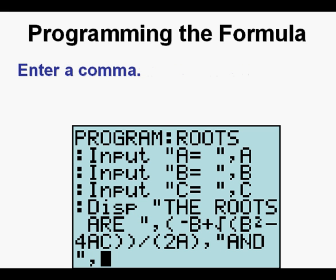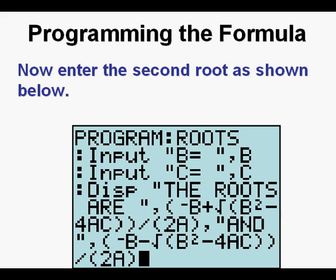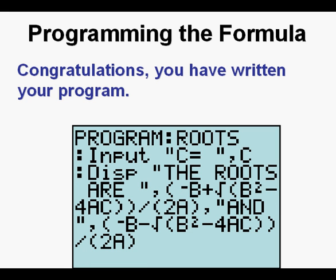Enter a comma, then enter the second root: open parentheses, negative B, minus square root of B squared, minus 4AC, close double parentheses, divide, open parentheses, 2A, close parentheses. Congratulations — you have written your program to calculate roots or solutions of quadratic equations.